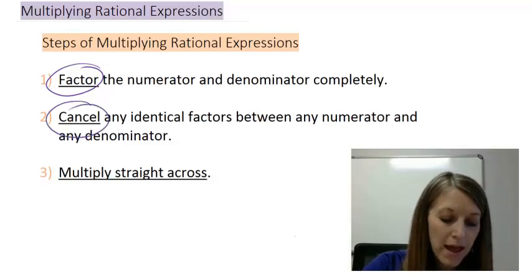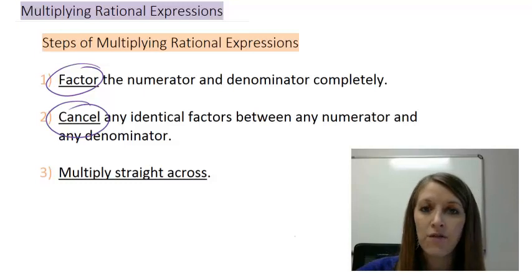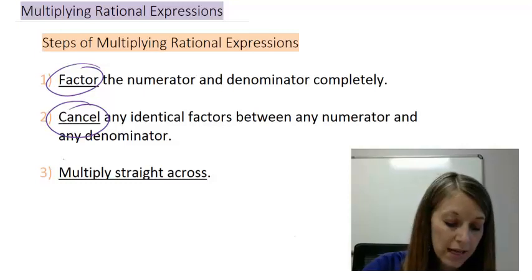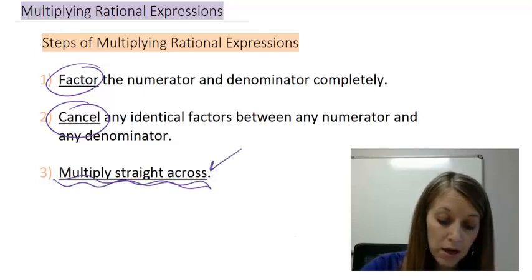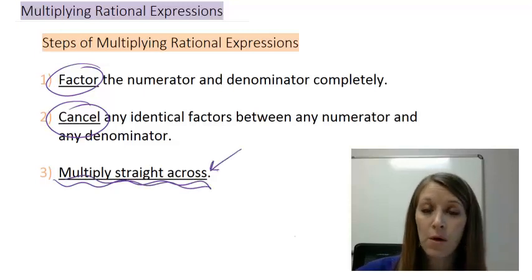But same rules apply. I cancel any identical factors, and it doesn't matter as long as it's in one numerator and one denominator. So they can be directly stacked on top of each other, or they can be across from each other. And our last step is to multiply straight across. So this step here is the really only new step that we have, and it's a very simple short step. So this is a perfect extension of simplifying rational expressions.